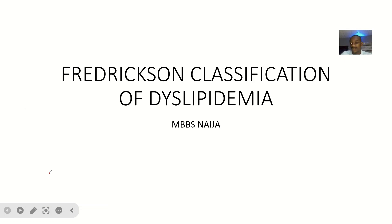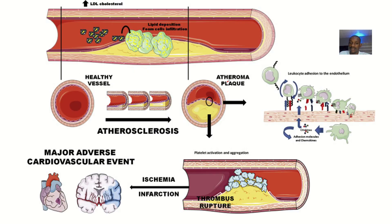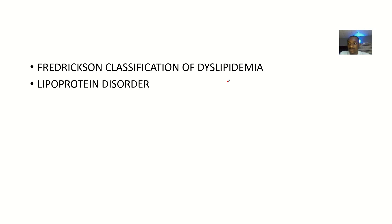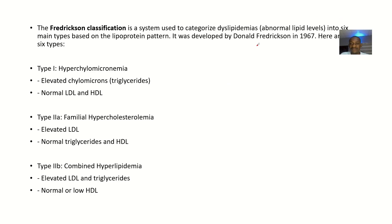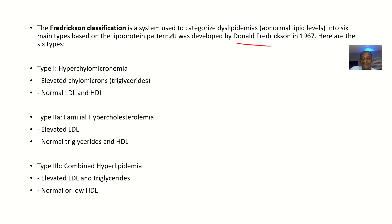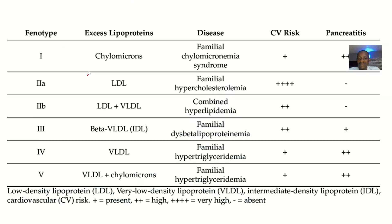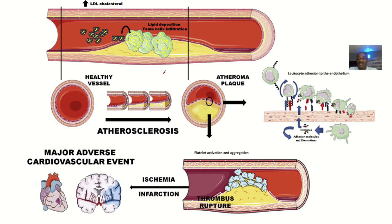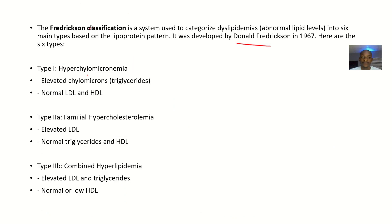There's another way of trying to classify dyslipidemias, and this is known as the Fredrickson classification. This classification covers lipid disorders and lipoprotein disorders. It was derived by the scientist Donald Fredrickson in the year 1967. The Fredrickson classification is a system used to categorize dyslipidemias — that is, abnormal lipid levels in the body — and is categorized into six main types based on the lipoprotein pattern.